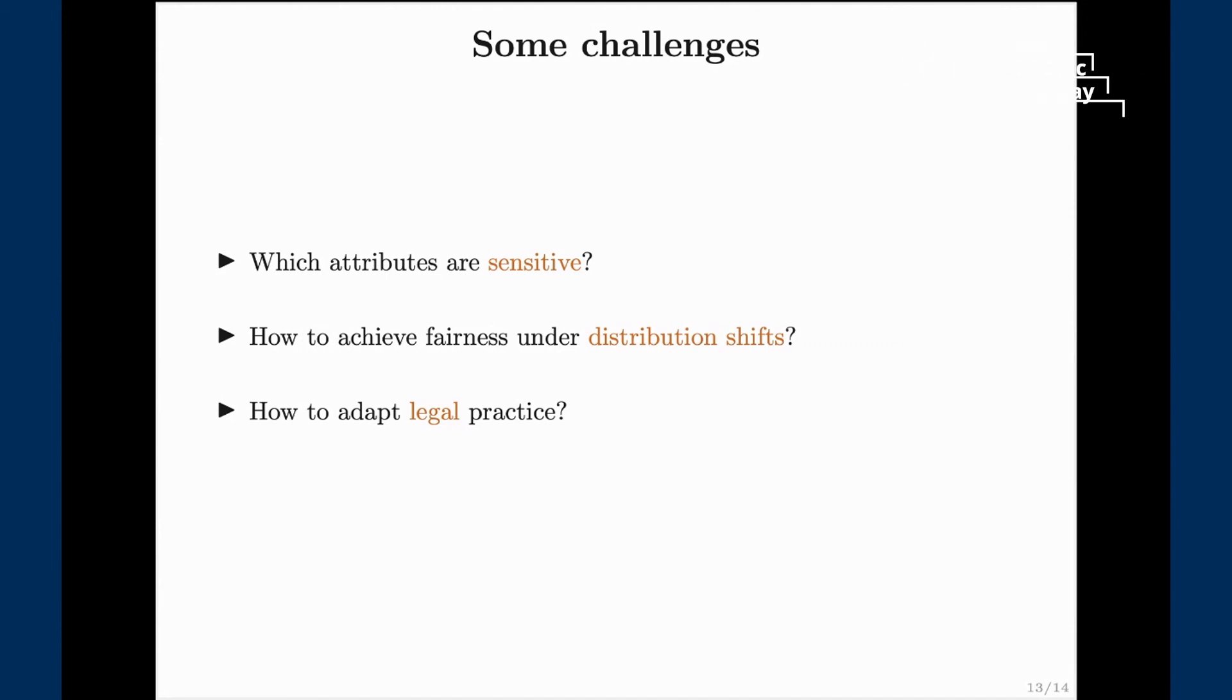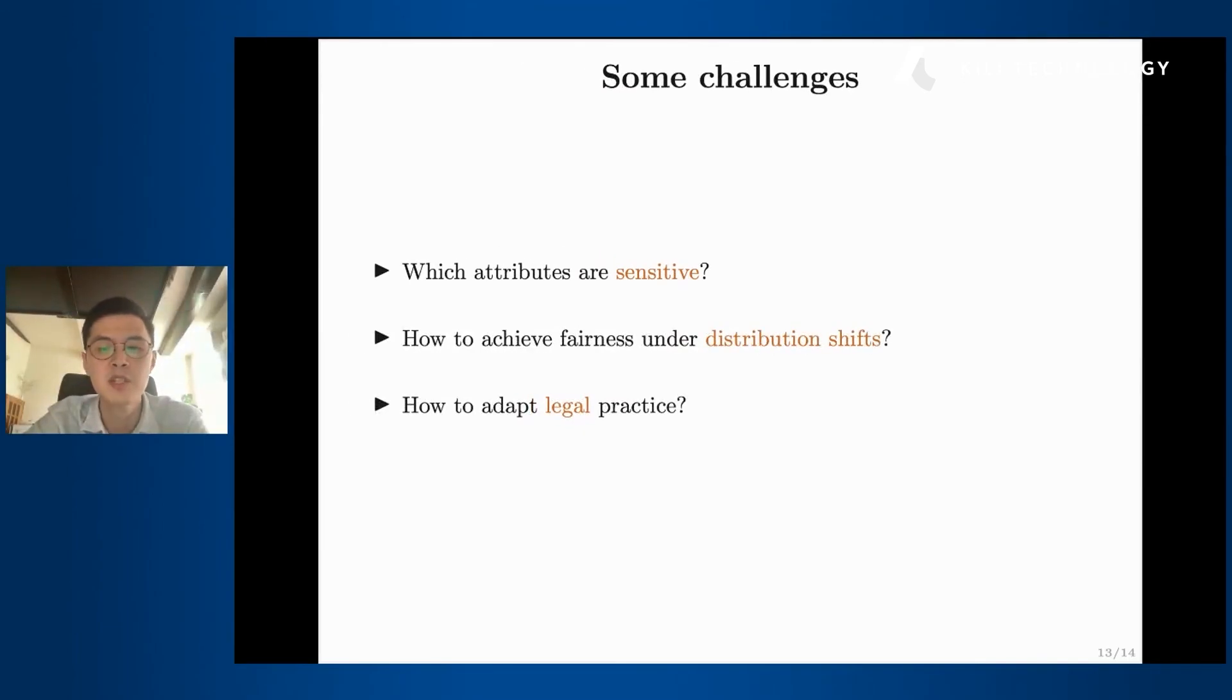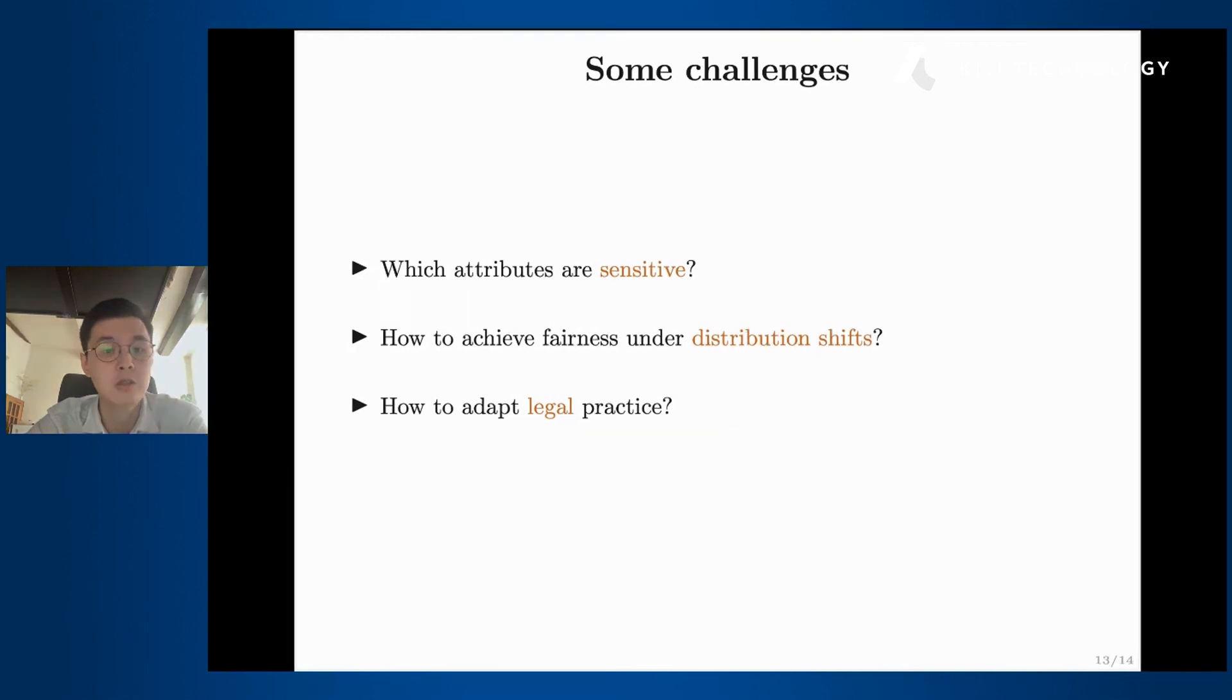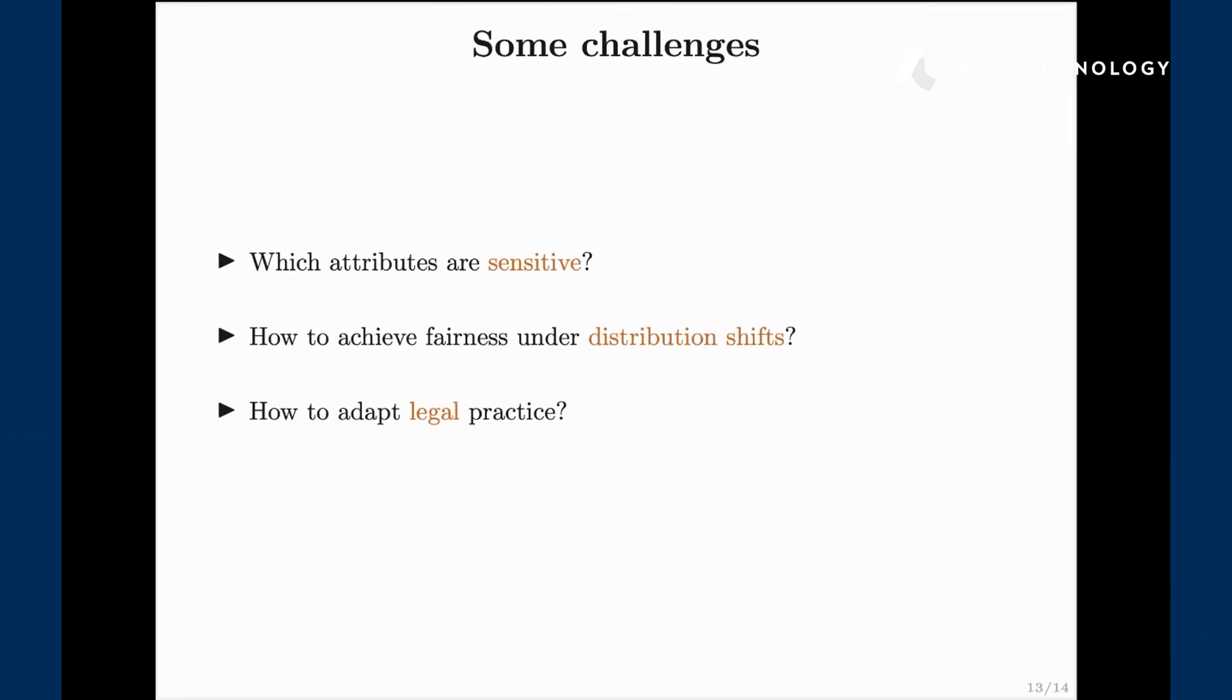Second is the robustness to distribution shifts. Let's say we have an algorithm that is fair right now, but tomorrow something happens or in one month something happens, our distribution changes a bit. Do we need to retrain or can we somehow from the beginning guarantee that we have accounted for distribution shifts as well? Finally, maybe the most important question out of all is how to efficiently and clearly communicate the research that happens in machine learning in this field of fairness with legal practice, with lawyers and with legal scholars. How to adapt our laws in order to make fairness research and fairness useful in real world?